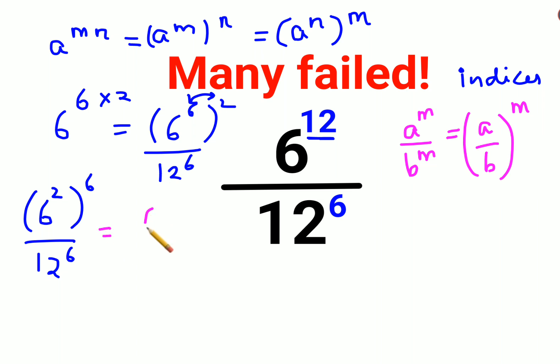So this can be written as 6 squared upon 12, the whole raised to 6. Now 6 squared is 36 upon 12, the whole raised to 6. 36 divided by 12 is 3.